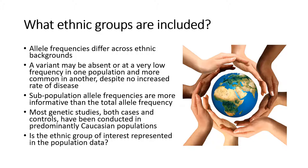Another important consideration is that most genetic studies to date, for both cases and controls, have been conducted predominantly in Caucasian populations. So our understanding of variant frequencies in other ethnic groups is still very limited. When assessing allele frequencies for a variant found in a non-Caucasian individual, it is important to determine if that individual's ethnic group is represented in the population being compared. If not, the comparison may not be informative. One important exception is that if the variant is seen at a high frequency in a different subpopulation, it still supports that the variant is not causative of disease.